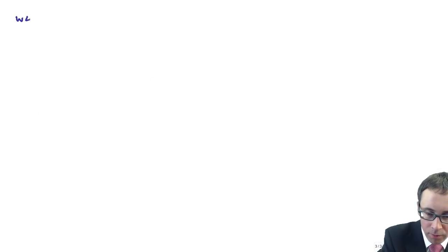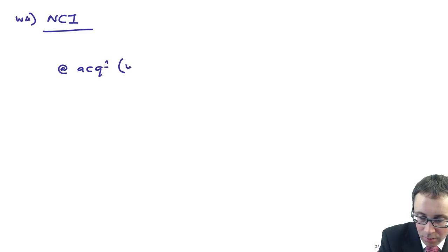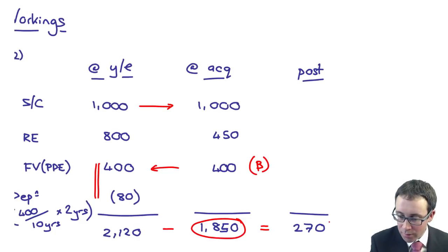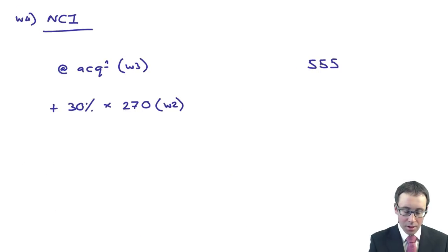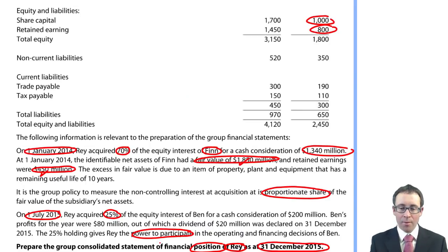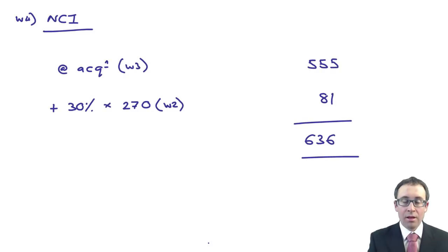Working number four is the non-controlling interest. We take the non-controlling interest at acquisition from working three, so that's the 555. To which we add on 30% of the post acquisition profits. Why 30%? Well, if we own 70, the NCI owns 30. Why 270? Well, that is the post acquisition movement in the net assets. 270 times 0.3 gives me 81, which gives me 636.